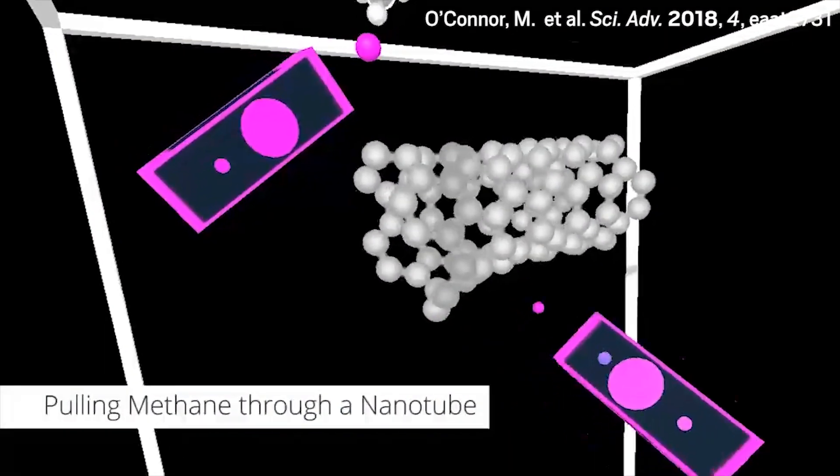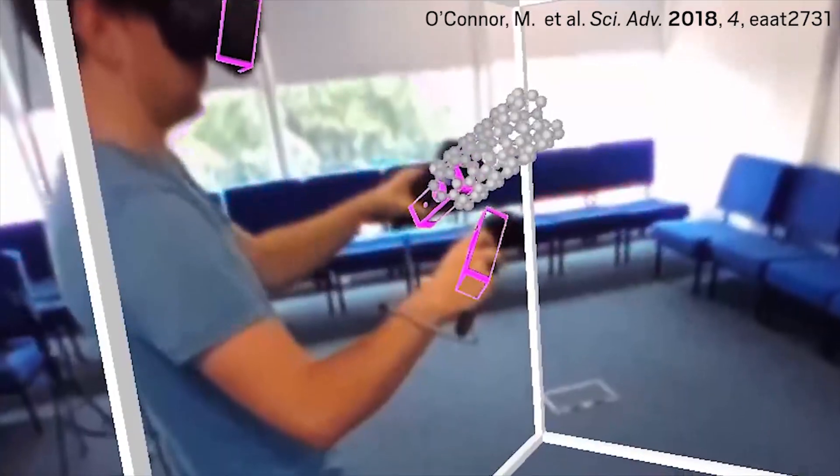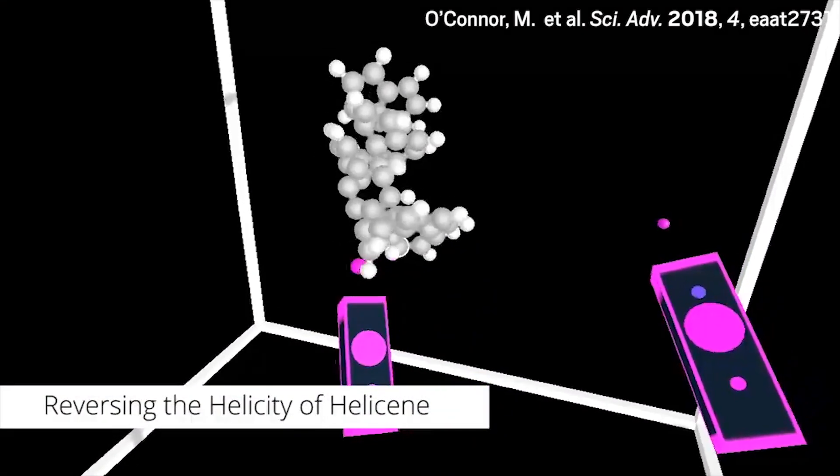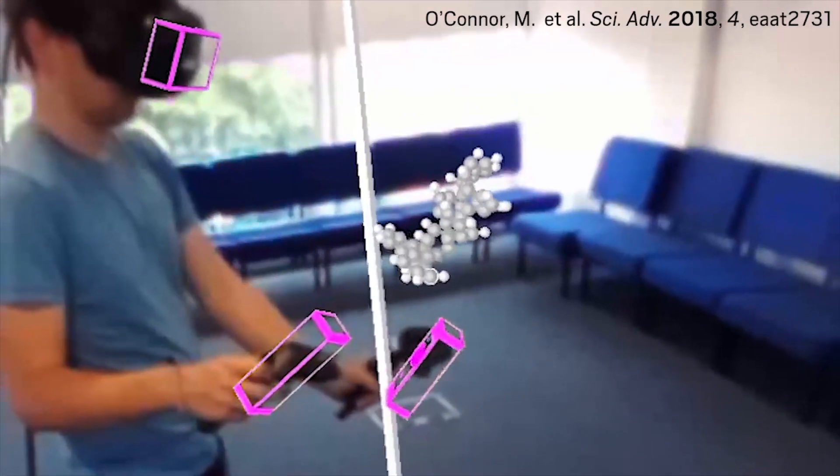The team studied how quickly users could complete tasks using the VR system versus a computer mouse or touch screen. They found that, after a brief practice period, testers could complete molecular tasks faster in the VR environment than by using more conventional interfaces.